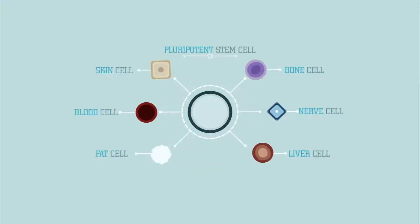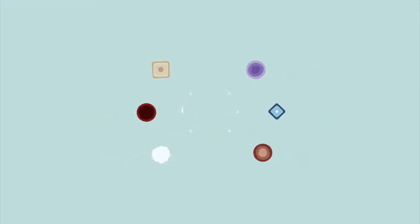Stem cells do have the potential to become all other kinds of cells in your body. Your body uses stem cells to replace worn-out cells when they die.